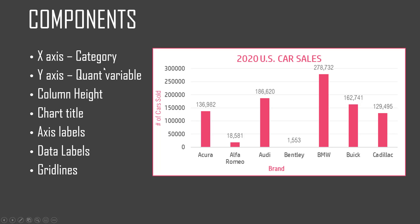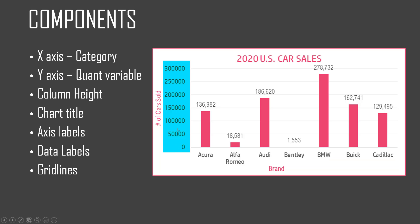Now let's understand the different components of a column chart. The x-axis represents the categorical variable — in this example, the brand name. The y-axis represents the quantitative variable, which in this case is the number of cars sold. The column height represents the quantitative variable — for example, Acura with 136,982 cars sold has a column height closer to 150,000 but above 100,000, so you can see it representing that numerical value.